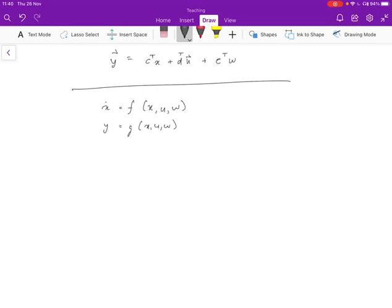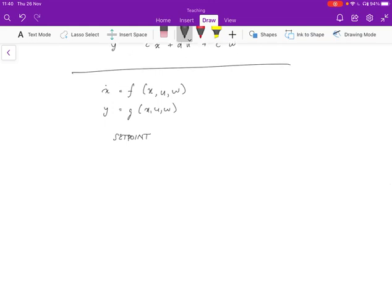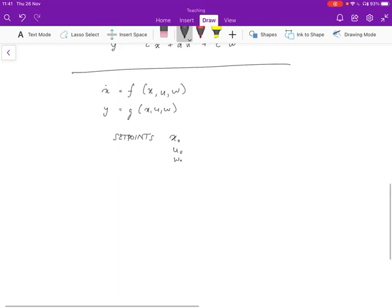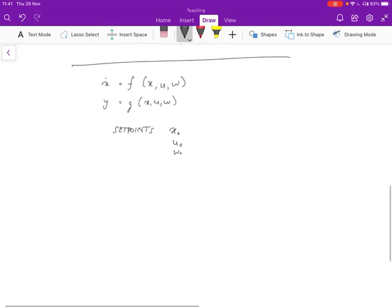Often what we do is we want to know how the system behaves in the neighborhood of a particular set point. So the set point meaning the values that we would like x to take and y to take are corresponding to x naught, and the set points are x naught, u naught, and w naught. These are the mean values or the central values.